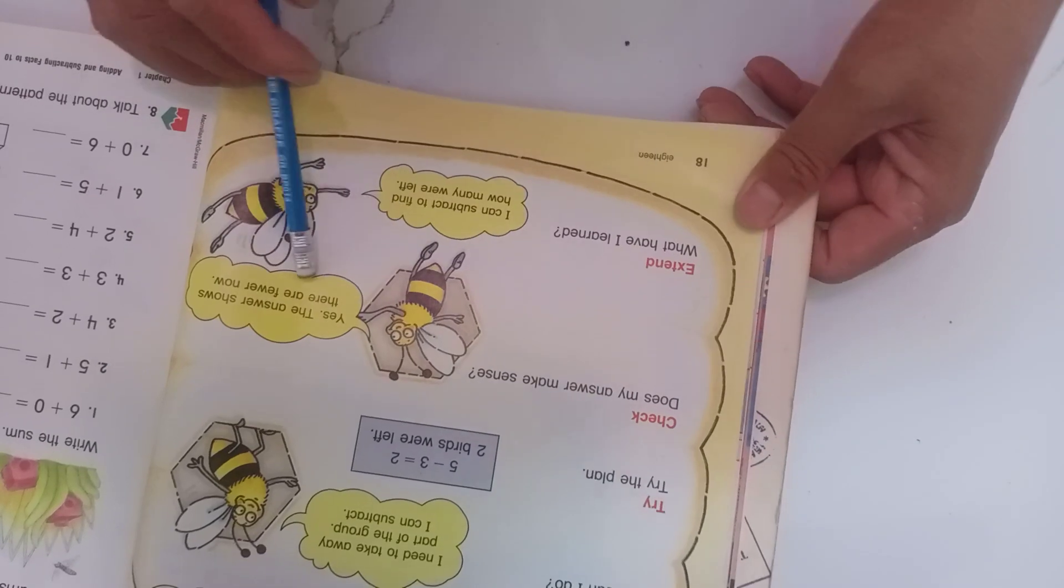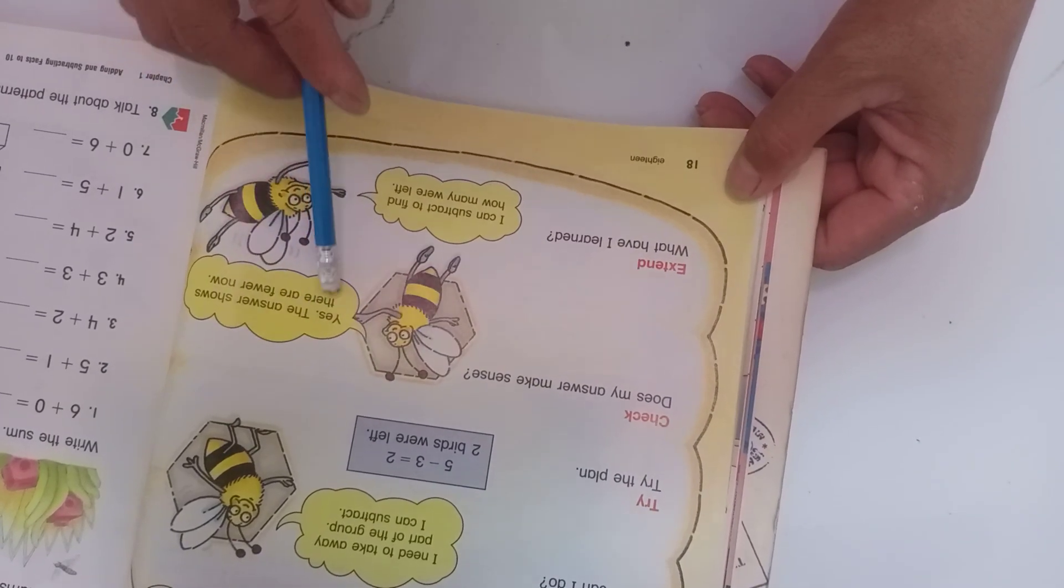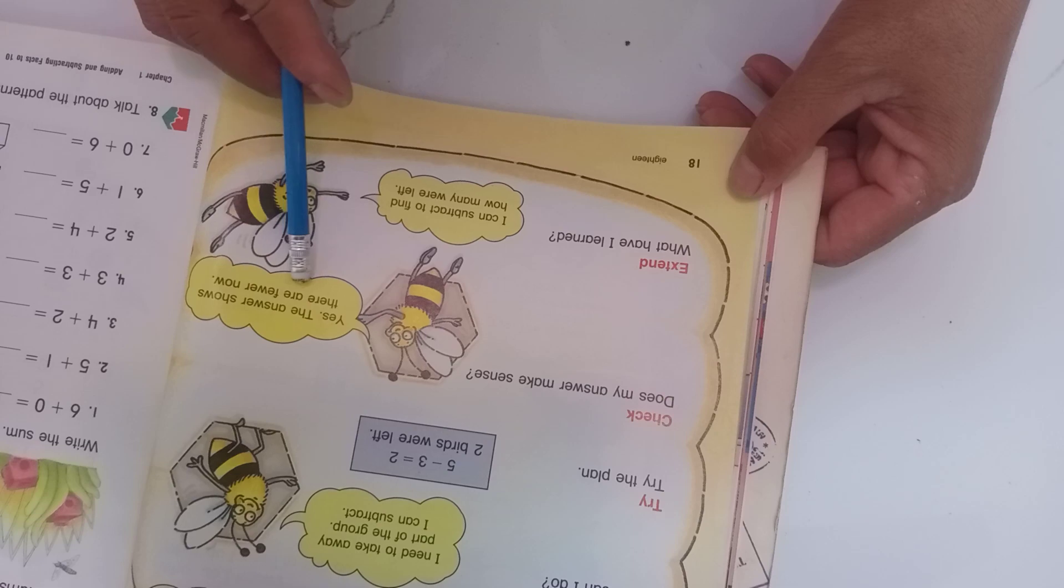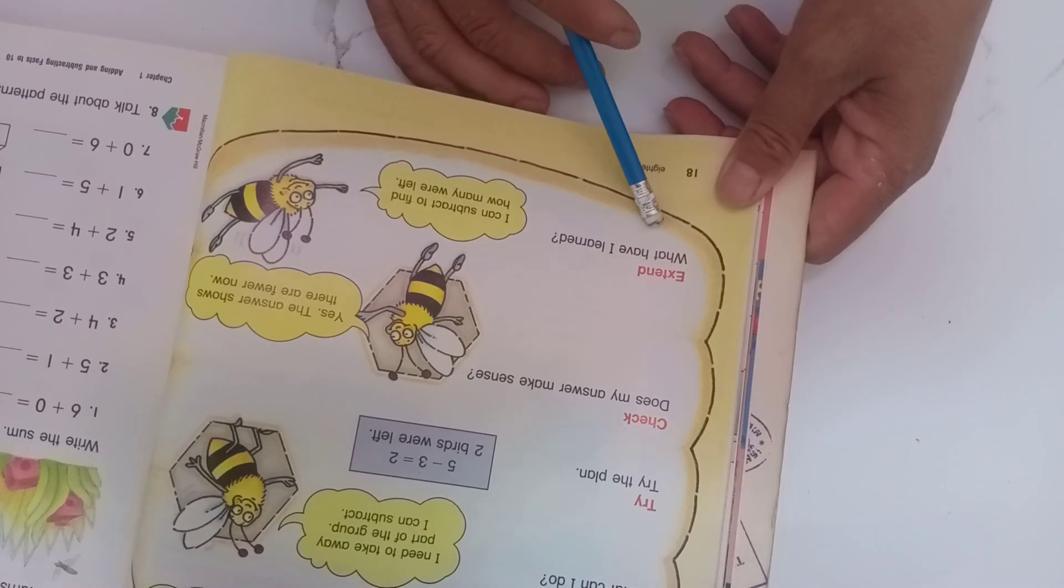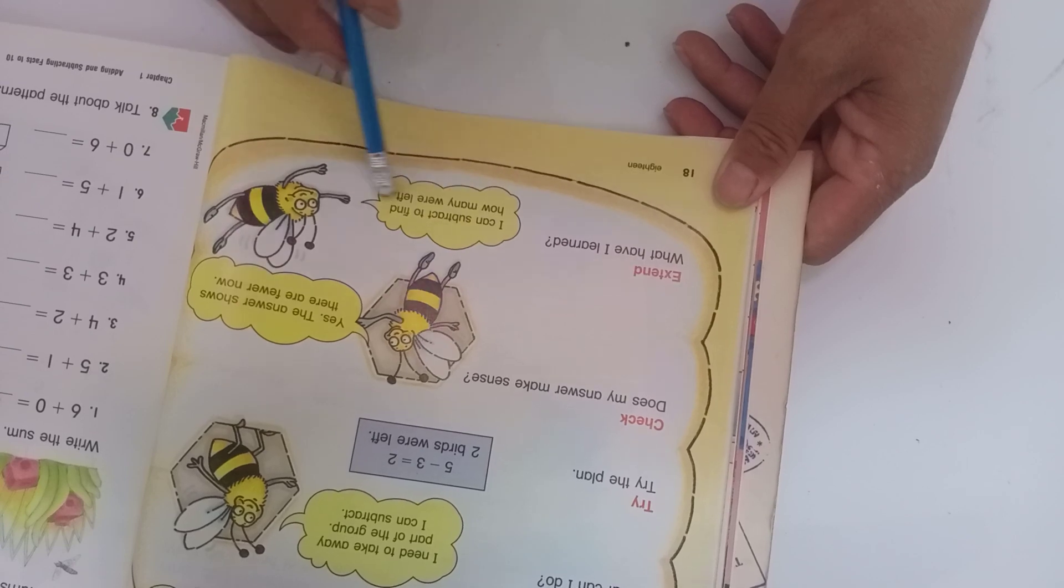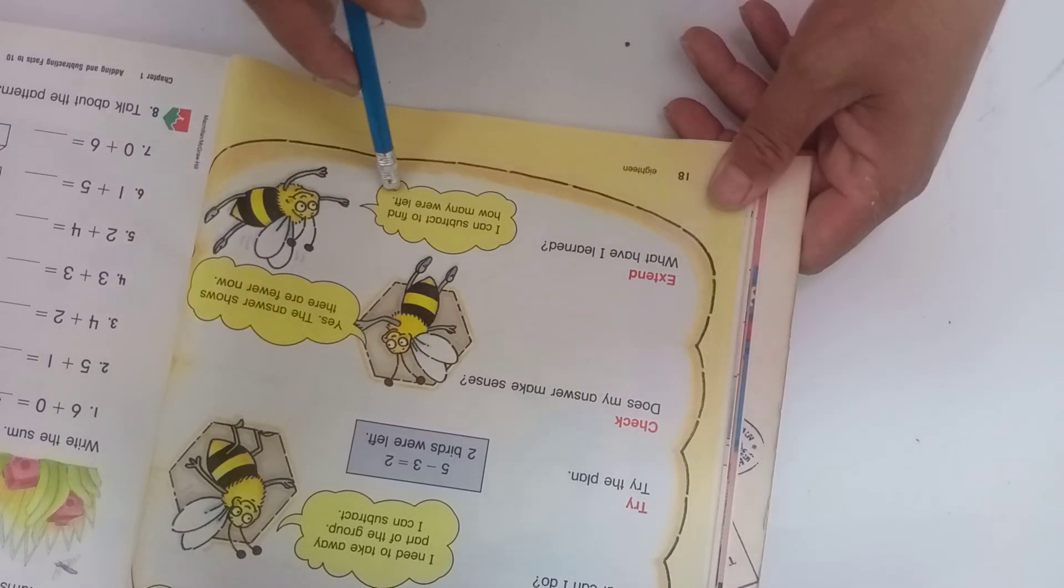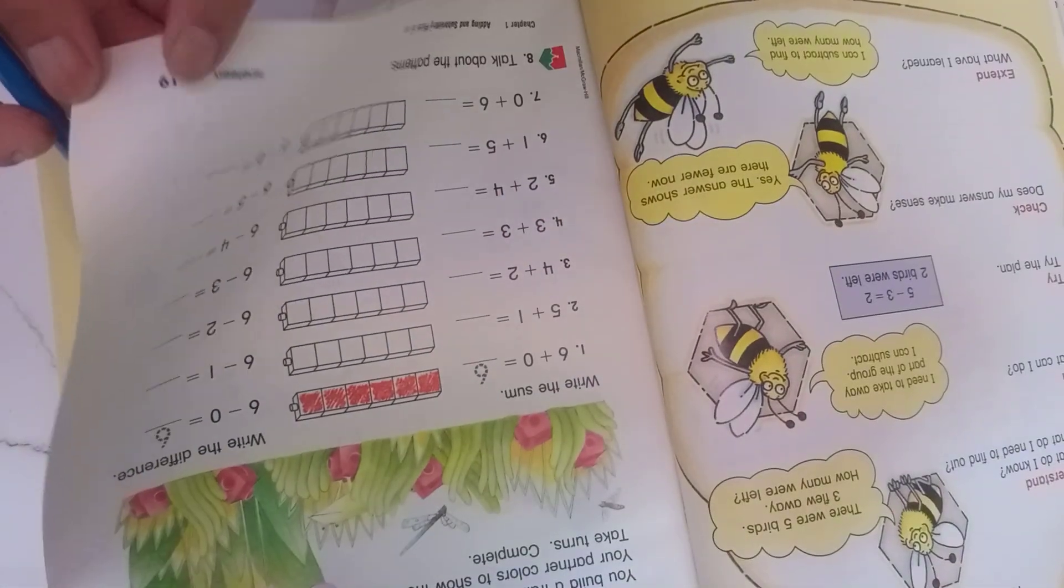Yes, the answer. So they are all correct now. What have I learned? I can subtract to find how many were left. And so now let's continue to the next page, page 19.